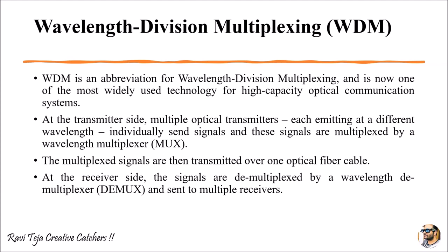Generally, a WDM system has a transmitting side and a receiving side. At the transmitting side we find a multiplexer, and at the receiving side we find a demultiplexer. In between, an optical fiber cable connects these two modules. At the transmitting end, multiple optical transmitters are present, each emitting a signal with a different wavelength. All these individual signals are multiplexed using a wavelength multiplexer, or MUX.